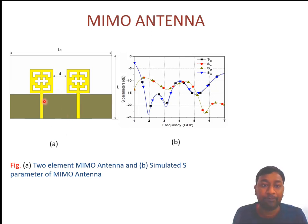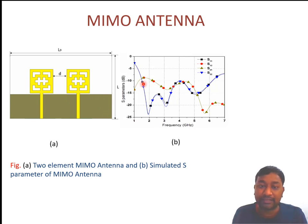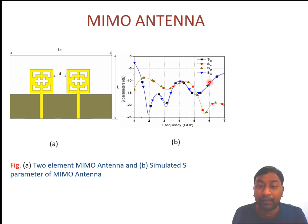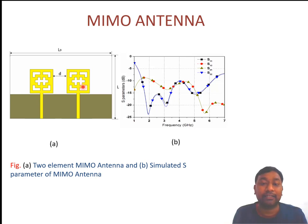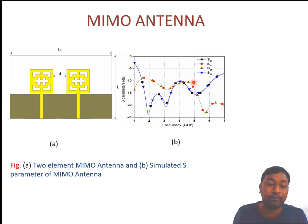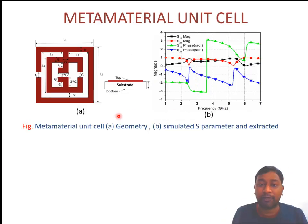Here we have seen the two-element MIMO antenna — the structure of the MIMO antenna is shown. We are using a partial ground structure, and we observed that our antenna operates from approximately 1.6 to 3.9 GHz and 4.1 to 6 GHz. However, the problem is that the antenna suffers from S12 — one antenna's radiation affects the other, causing an isolation problem. We observed that isolation near 2.5 GHz is only about −10 dB, and in other bands isolation is very poor. To improve isolation performance, we use a metamaterial-inspired unit cell structure as a decoupling network between the two elements.